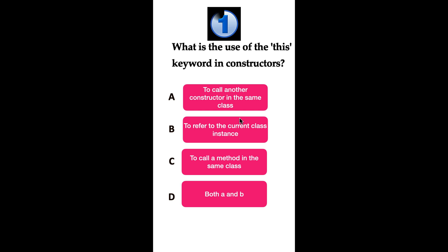The correct answer is both option A and option B. The this keyword is used in a constructor to call another constructor in the same class, and it is also used to refer to the current class instance.